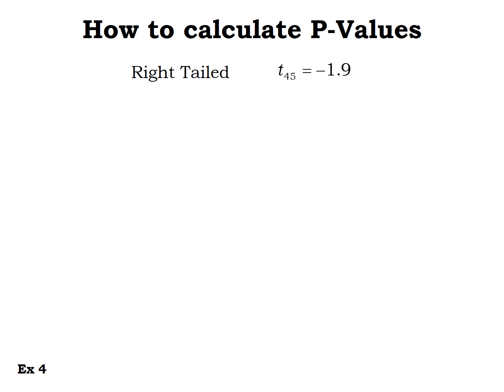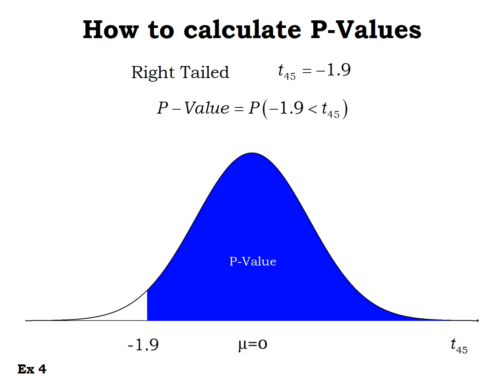For a right-tailed test with t-score negative 1.9, we find the area to the right of the test statistic. We shade the right side of the graph, and using t-CDF, that p-value turns out to be a large number — approximately 0.9681.